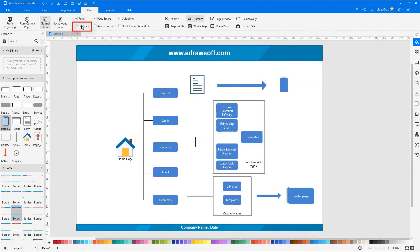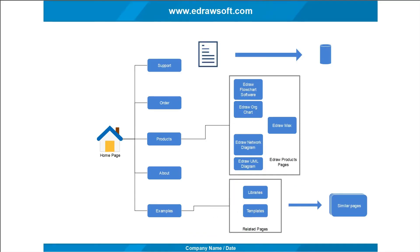Uncheck Gridlines under the View tab and click on the From Beginning icon to preview the diagram in a single frame.